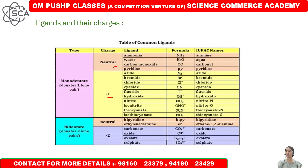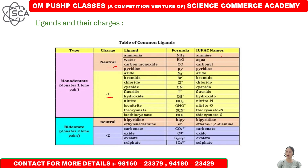We have neutral ligands like ammonia — in the next lecture we will see how to write IUPAC names. We have amine, aqua, carbonyl, pyridine. Then for minus 1 charge we have fluorido, bromido. You need to know the charges on these ligands — which ligand carries what charge and what oxidation state.